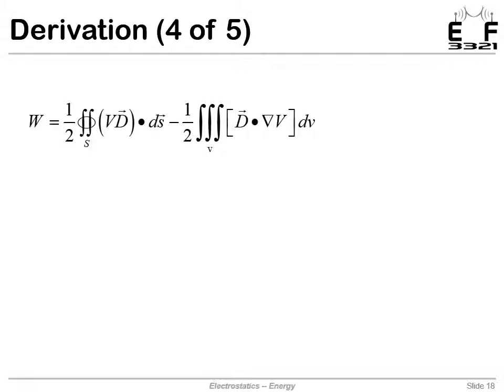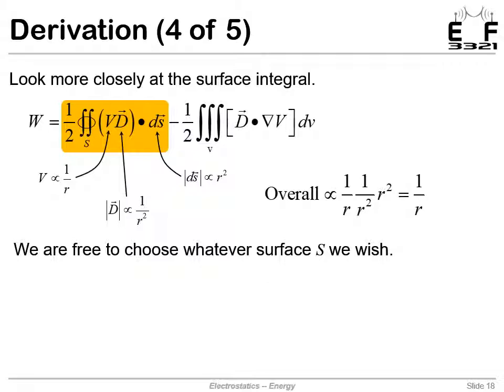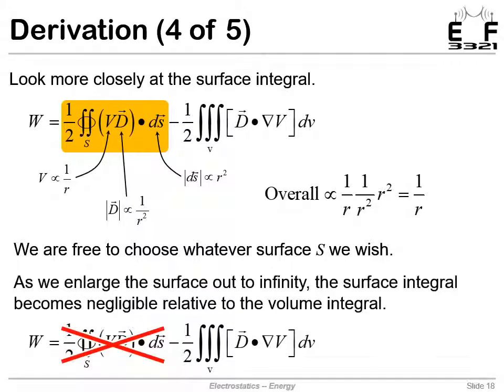There's our equation from the previous slide. Let's take a closer look at this first integral and figure out how it depends on the distance r. The potential decays with one over r. We know from earlier lectures that the electric flux density decays with one over r squared, r being the distance. Our differential surface area is proportional to r squared. We're multiplying all of these together, so the overall dependence is one over r. It's a closed contour surface integral, and we're free to choose whichever surface we want. What would happen if we chose a surface approaching infinity? That r approaches infinity, and in fact, that whole integral approaches zero because one divided by infinity is zero. We're only left with the integral on the right side.